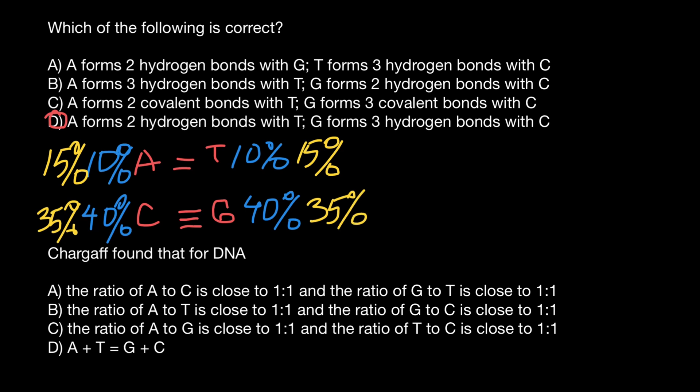It is just enough to know the frequency of one base, and we can determine the frequency of the three other bases — it can be any base. We can start with guanine, or start with cytosine, and find the frequency of the other three bases. Now we can choose the correct answer: it's going to be answer B.